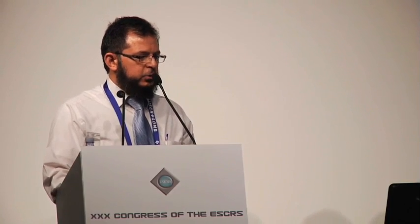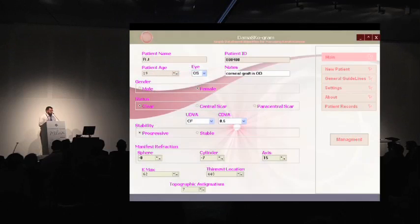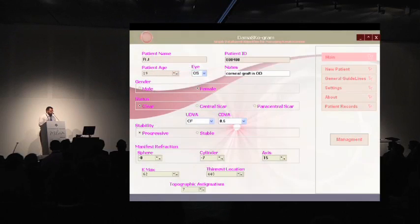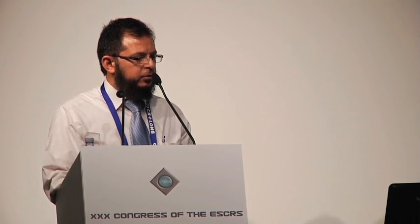The software also provides a discussion of the case. For the second example, a 19-year-old female has a clear cornea in her left eye. Uncorrected visual acuity is counting fingers; best corrected visual acuity is 0.6. The case is still progressive. She has a very high refractive error of minus 8, minus 7. The K-max is 62 diopters and the thinnest location is 440 microns. The topographic astigmatism is also consistent with the manifest astigmatism.